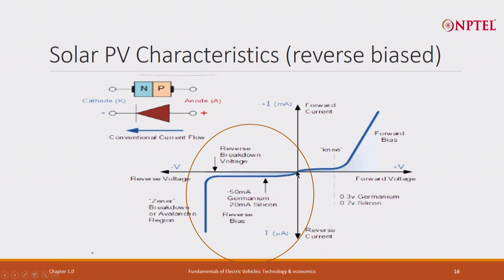It is the reverse bias that we are more interested in. This happens only when light falls. And when the light falls, when there is no light falling, of course, this is what you see. And then there is a breakdown.